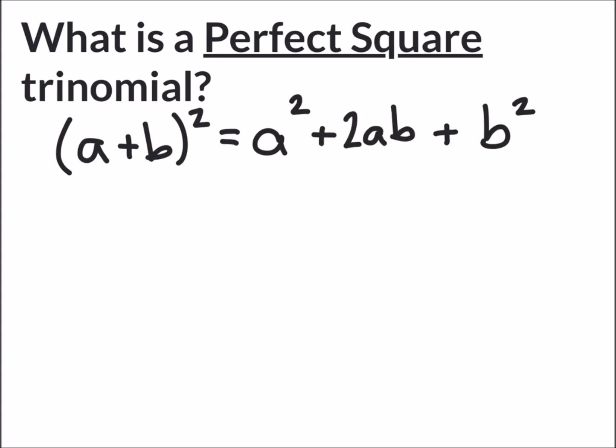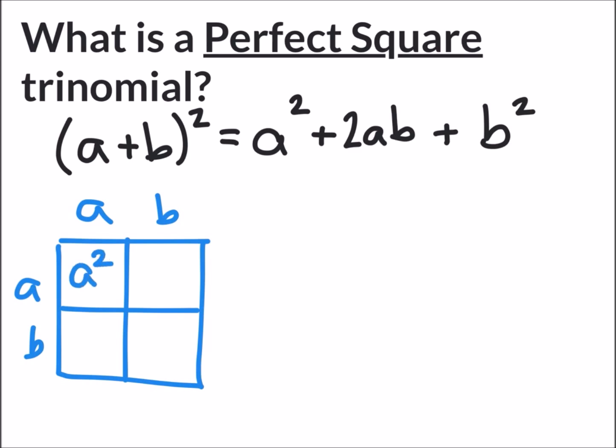And we can also show that in the box method by drawing our box and dividing into quadrants. Say the side lengths would be a plus b and a plus b. a times a gives us a², a times b gives us ab, a times b gives us ab once again, and b times b gives us b².